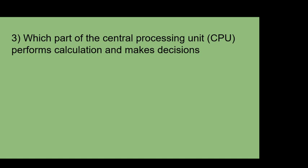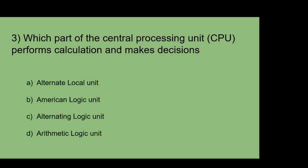Which part of the central processing unit performs calculations and makes decisions? A: Alternate local unit. B: American local logic unit. C: Alternating logic unit. D: Arithmetic logic unit.